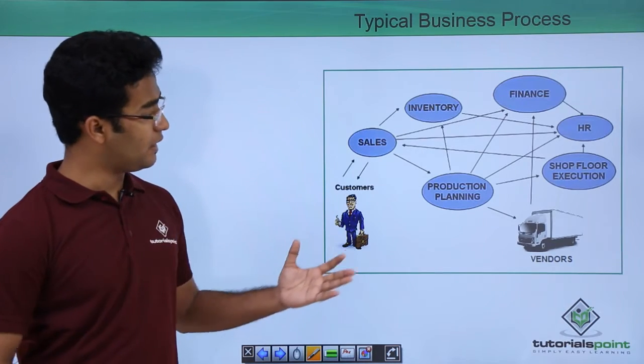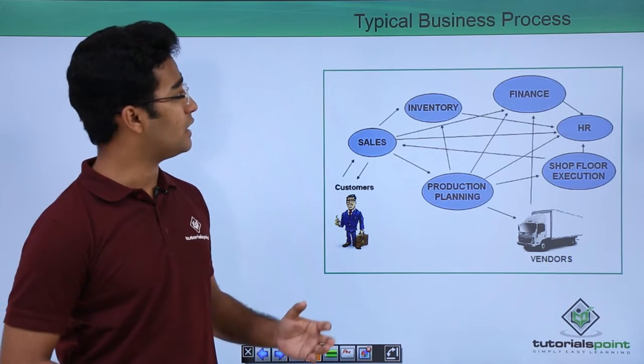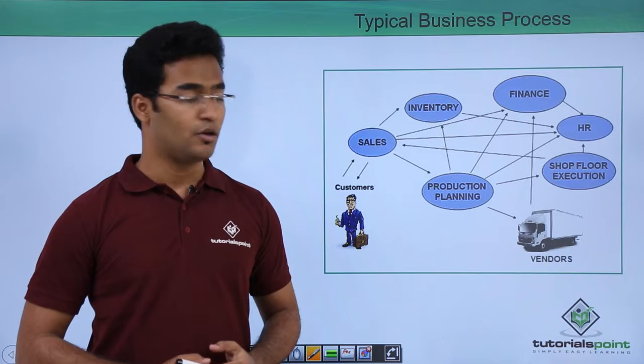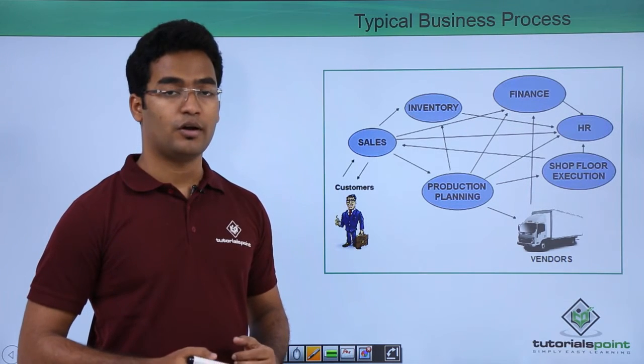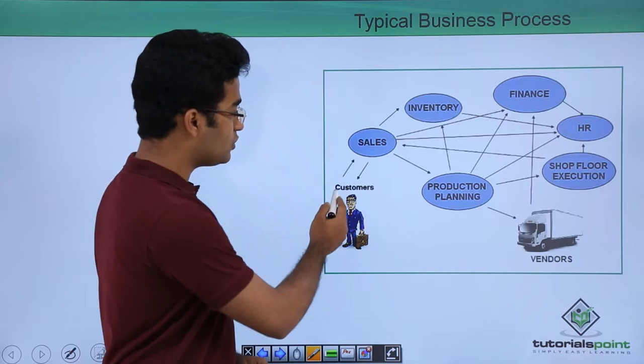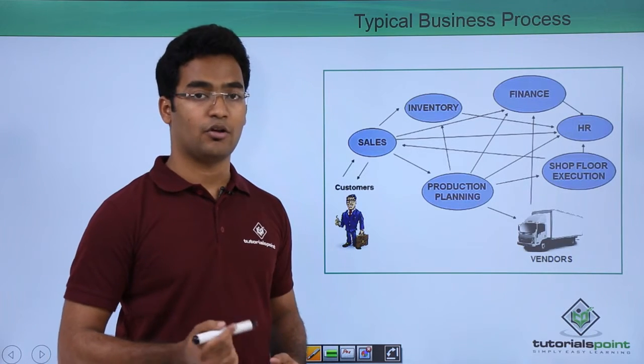Now with an example I will try to make you understand the typical business process model. Suppose there is a customer who wants to buy a particular product. What he does is he approaches the sales department to buy that particular product.